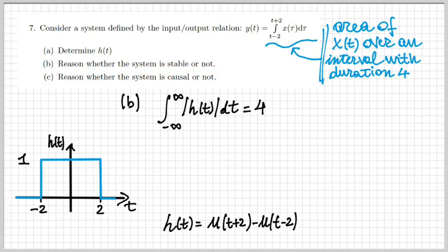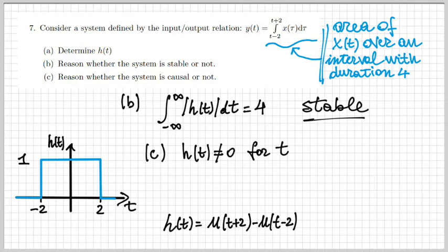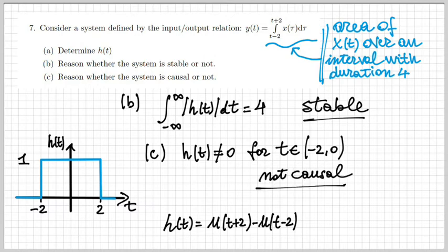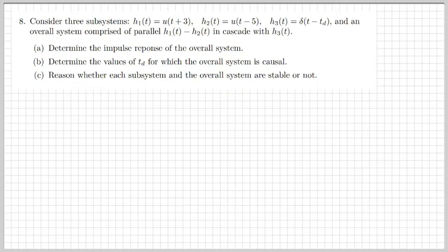Since 4 is clearly finite, we can conclude that the system is stable. For causality, we notice that h(t) is non-zero for negative times — in particular when t is between minus 2 and 0 — therefore the system is not causal.